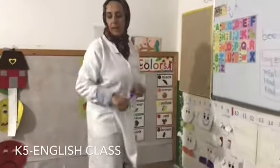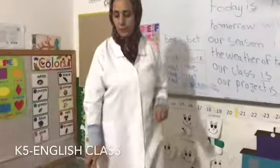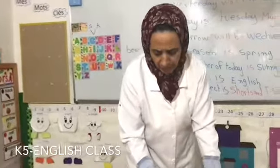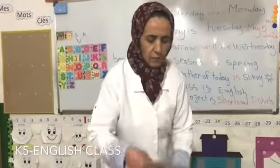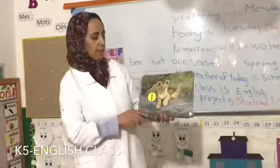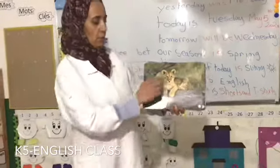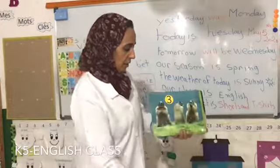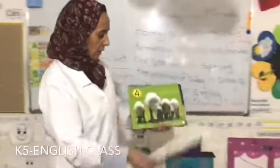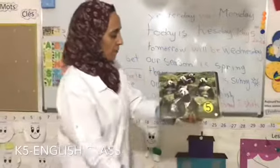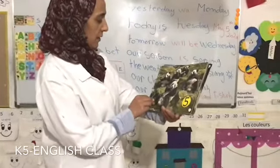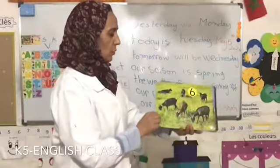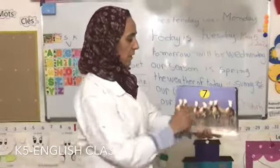Now let's move to the numbers. We have the first number is number one — one baby lion. Two — two baby lions. Three — three koalas. Four — four sheep. Five — five pandas. Six goats. Seven horses.